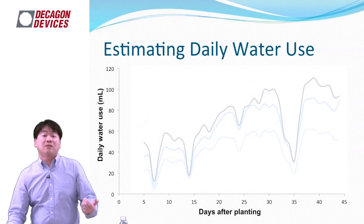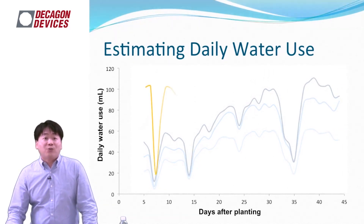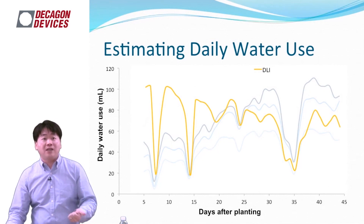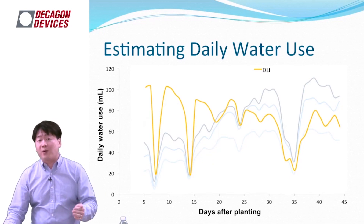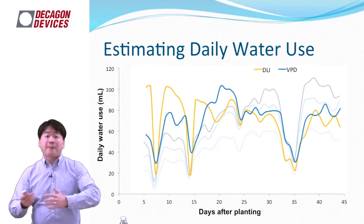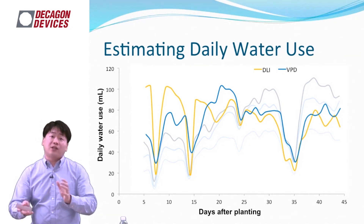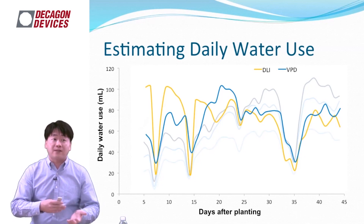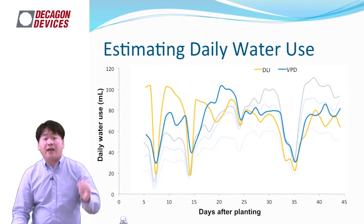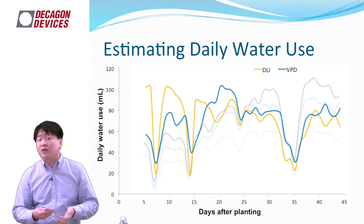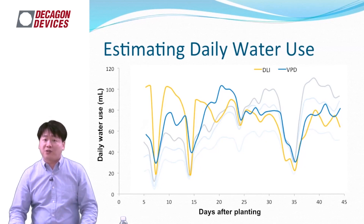By measuring the environmental factors of the plants, we could see the correlation between environment and plant daily water use. It shows the DLI (daily light integral)—the total amount of light per day—has a very good fit with water use. At the same time, the vapor pressure deficit, which has a direct effect on transpiration, also shows very good correlation with daily water use. Using these environmental and plant factors, I could build a very good regression model for predicting and estimating the daily water use of petunia.